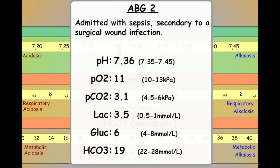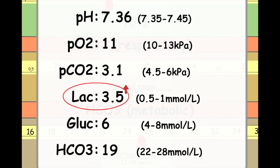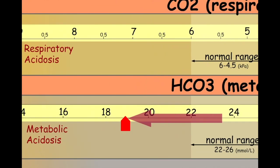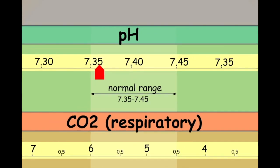Our second ABG has been taken from a patient suffering with sepsis. As we know, one of the complications of sepsis is a buildup of lactic acid in the blood. Therefore, we could reasonably expect this patient to be suffering from a metabolic lactic acidosis. We can see from this ABG that the lactate is in fact elevated. Not only that, but we have a reduced bicarb level, which would be consistent with a metabolic acidosis. However, if we look at the pH, we can see that it's neutral—it's within a normal range.